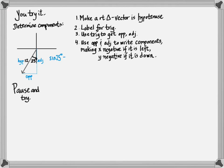Then I'm going to use trigonometry to figure out how long the adjacent and the opposite are. So I have sine 25 degrees as opposite over 12. Solving that out, I get the opposite as 5.1. Cosine 25 degrees is adjacent over 12. Solving this out, I get adjacent as 10.9.